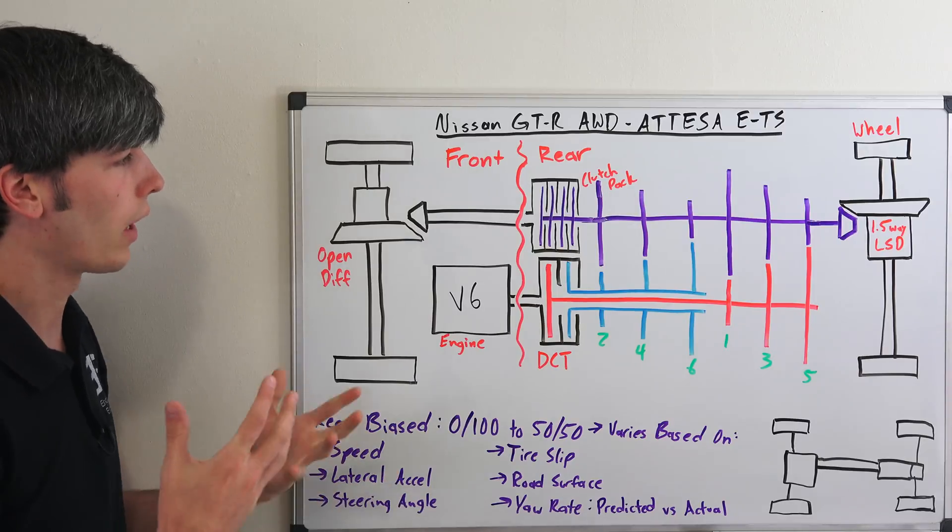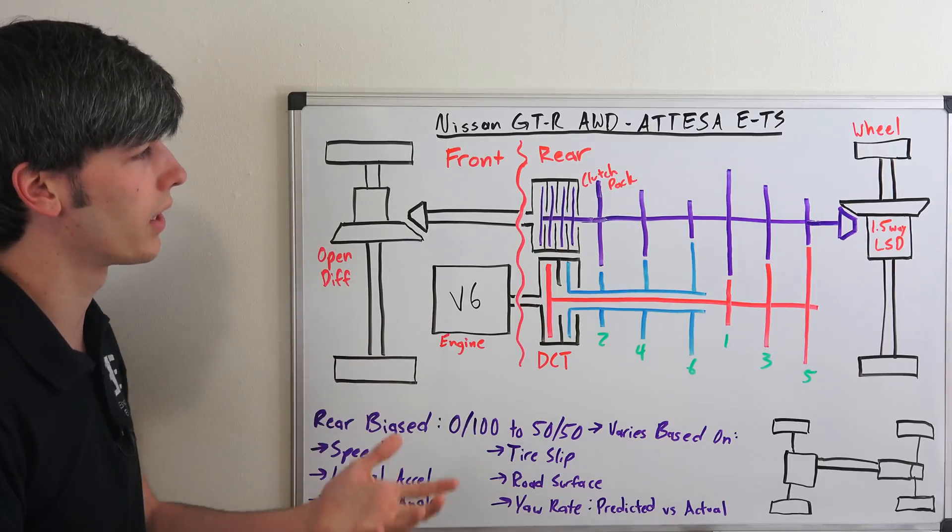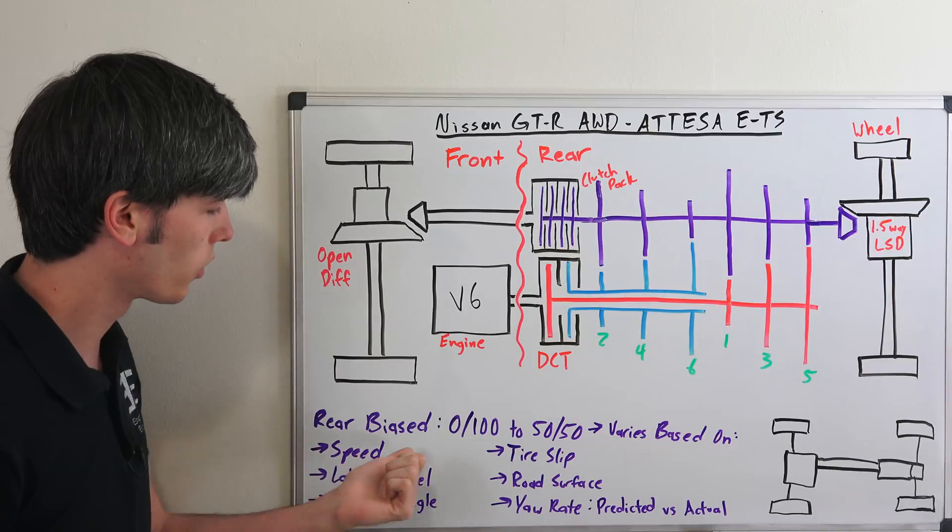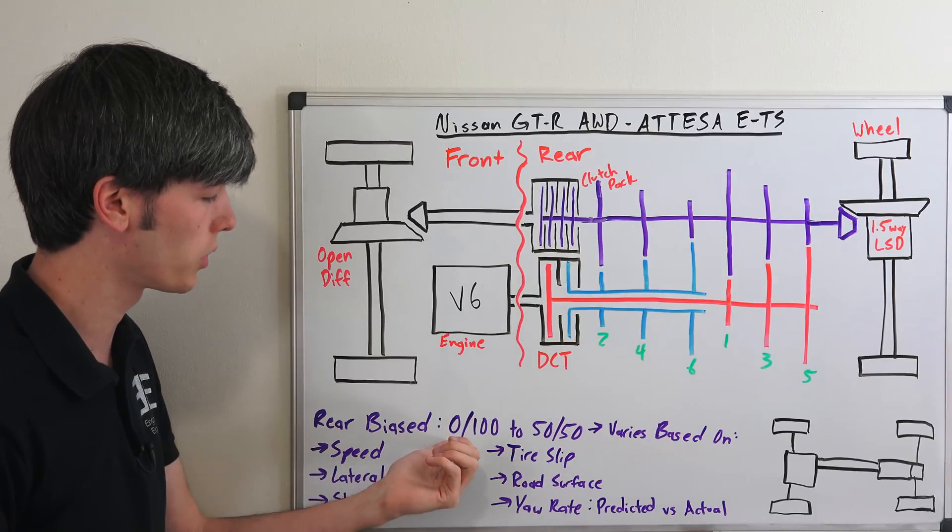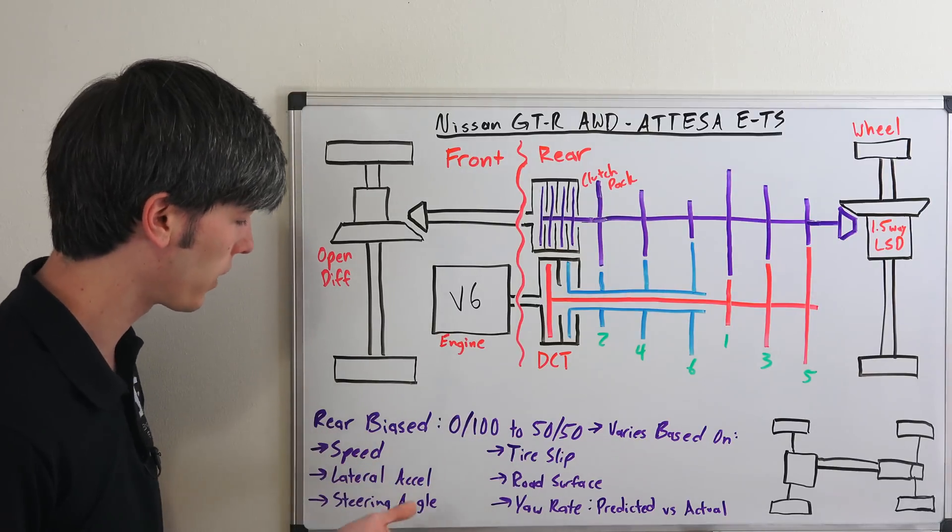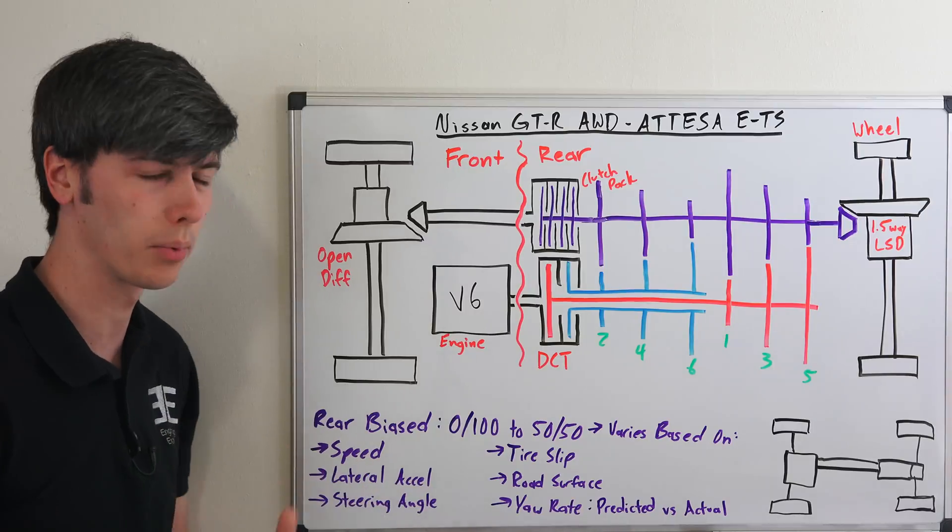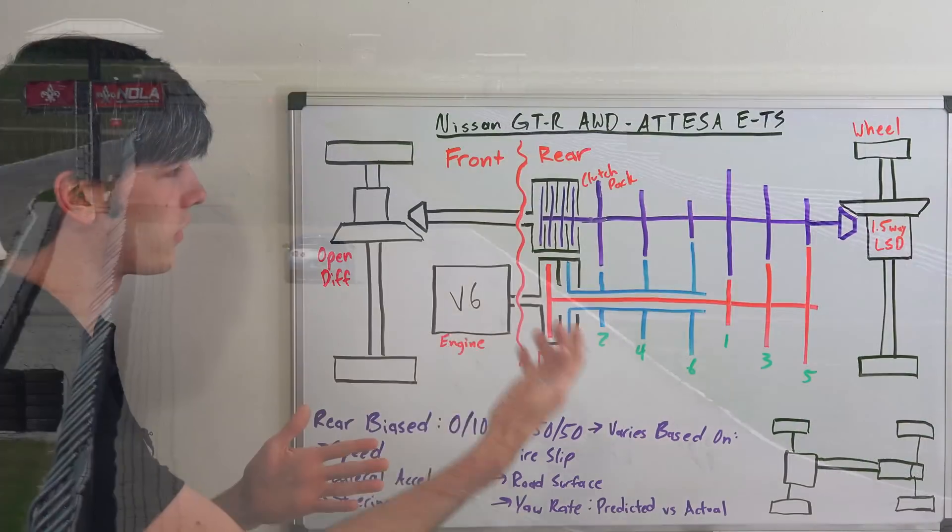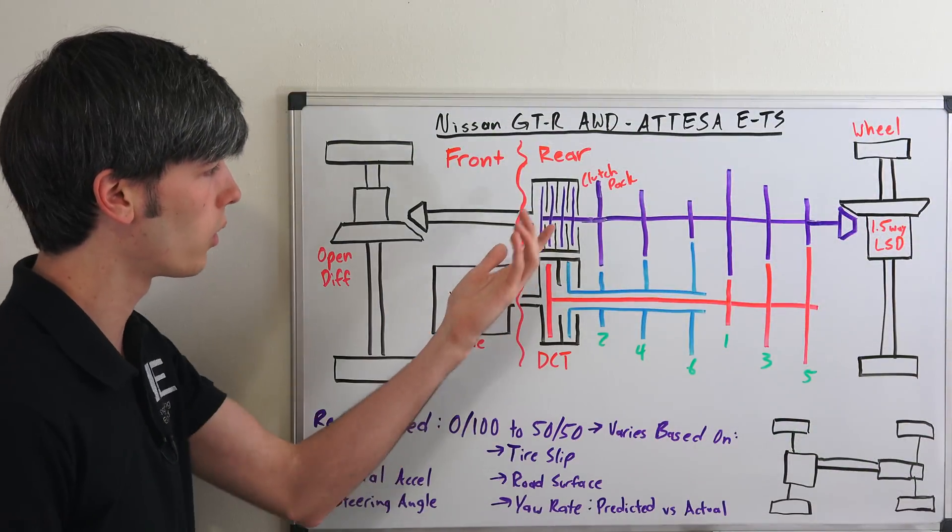So as I mentioned, a lot of this comes down to software, and that's how the real advantage of this system comes about. So you're going to be varying the torque distribution from 0 to 100 to 50-50, and you're going to be changing this based on different parameters. So speed, for example, if you're going really fast and for example in a straight line, you probably don't need to send much power to the front wheels, so it won't have this engaged.